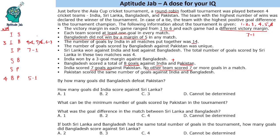So we have: India vs Pakistan is 7-1, India vs Bangladesh is 6-3, giving 13 goals, meaning India will score 1 goal against Sri Lanka. Also, since the number of goals scored by Bangladesh against Pakistan was unique, we cannot have 5 goals in any other match.